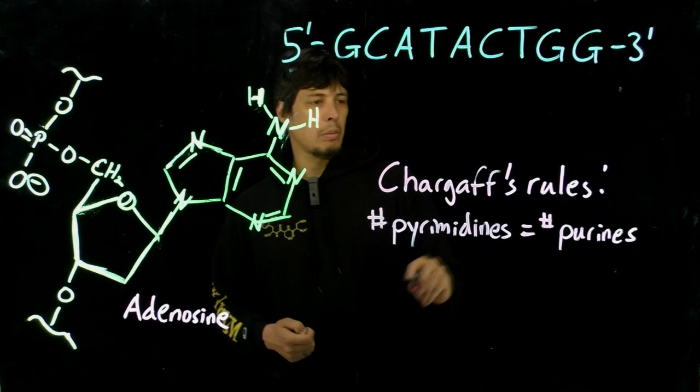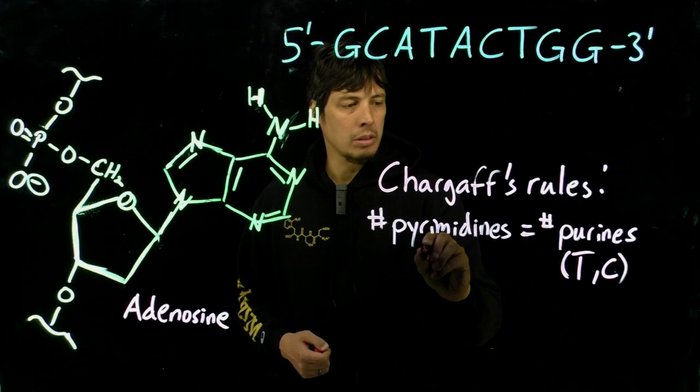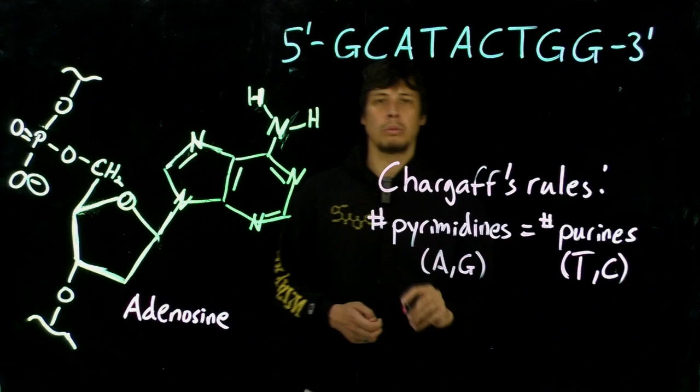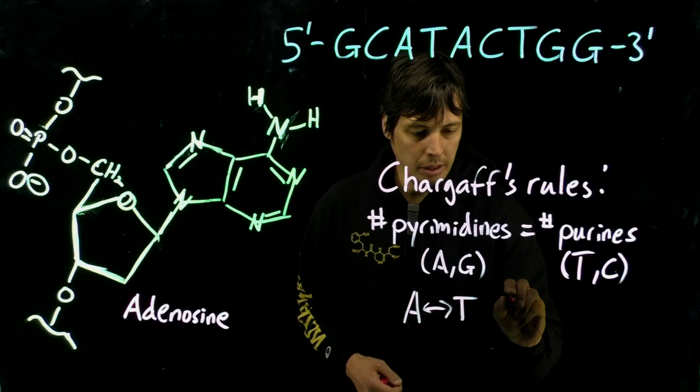And remember that our purines are going to be, for DNA, A and G, and pyrimidines are going to be T and C. We know this rule better by saying that A complements the T and G complements the C.